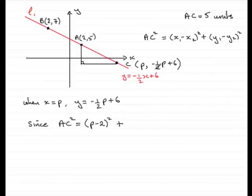Now, I'm going to choose this y value here first of all, and so that's going to be minus a half P plus 6, and then minus the y coordinate here, minus 5, and square that. Now, all I need to do is to simplify this. I also know that AC is 5, so I can write 5 squared, or 25, equals. Now, let's square this bracket out here. P minus 2 times another P minus 2.